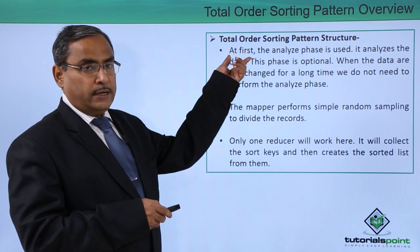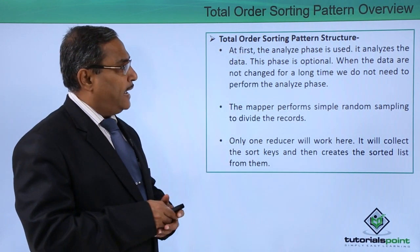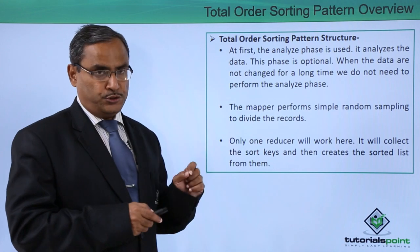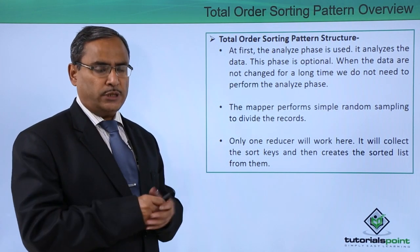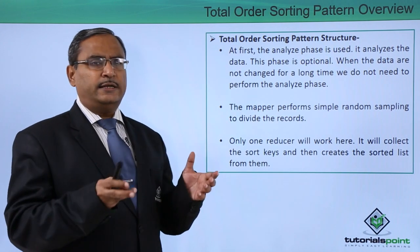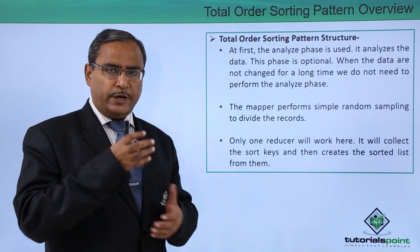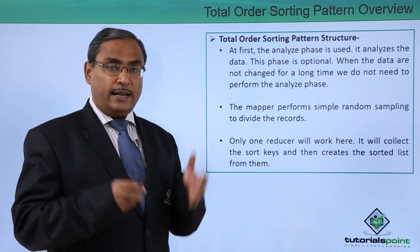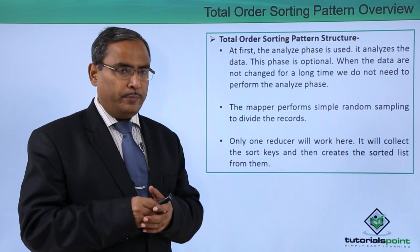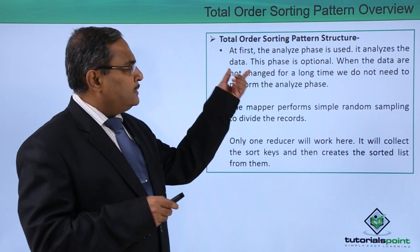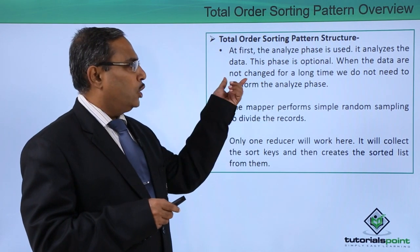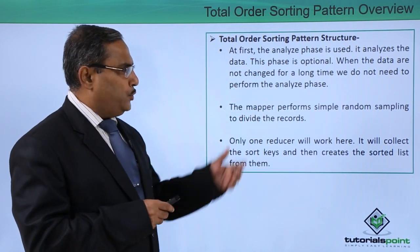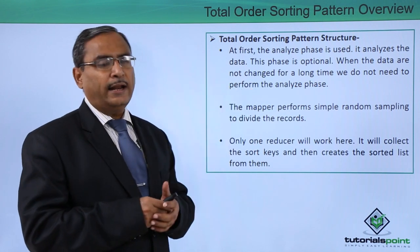So total order sorting pattern structure. At first the analyze phase is used. We will be going for the analysis phase but this phase is optional. If the data set is not getting frequently updated in the current time, this analysis phase can also be omitted. It analyzes the data. When the data are not changed for a long time we do not need to perform the analyze phase.